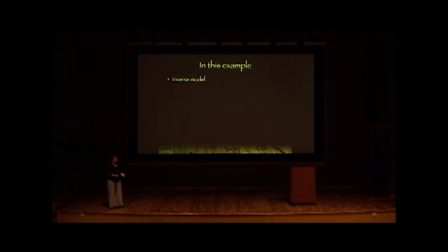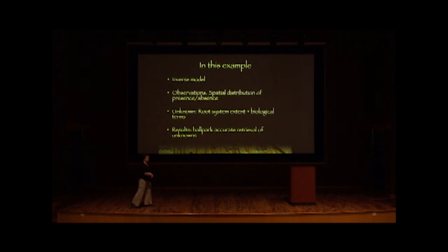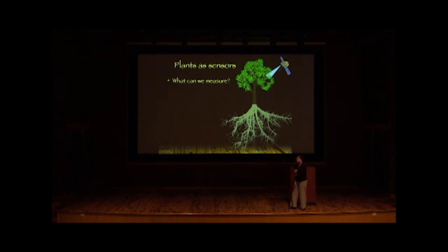So in this example, we have an inverse modelling framework. Our observations now are something quite different. They're a spatial distribution of presence or absence of plants. And our unknown here, there's a whole bunch of biology stuff, plus the root lengths. And we get this ballpark accurate retrieval of what's going on under the ground. But it's a pretty exotic situation, right? So this isn't necessarily the pattern that we see everywhere when we look around, and there's a lot more work to do. So I want to move on to really work that we've got in progress right now, which is starting to get increasingly speculative in terms of having great results to produce. And really to think about the idea of using a plant as a sensor of the subsurface, which comes back to thinking about what can we really measure at the scale of individual organisms.